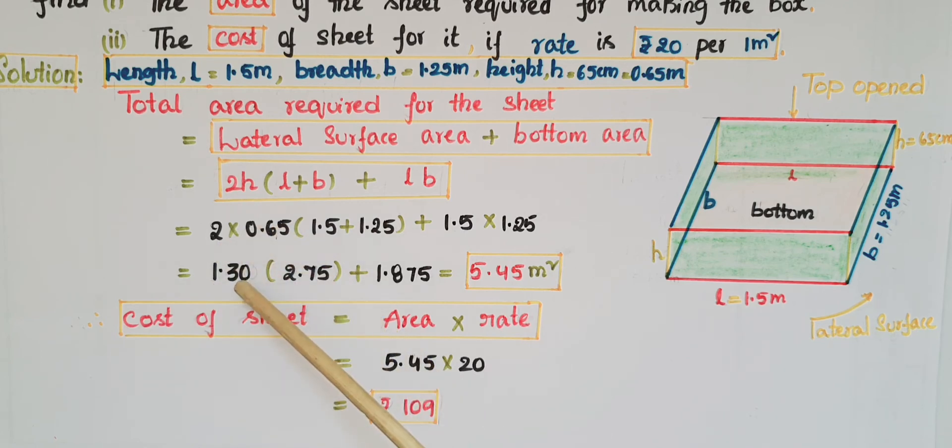Here the values are 1.3 × 2.75 + 1.875, which equals 5.45 meters square. So here we got the total area required for the sheet.